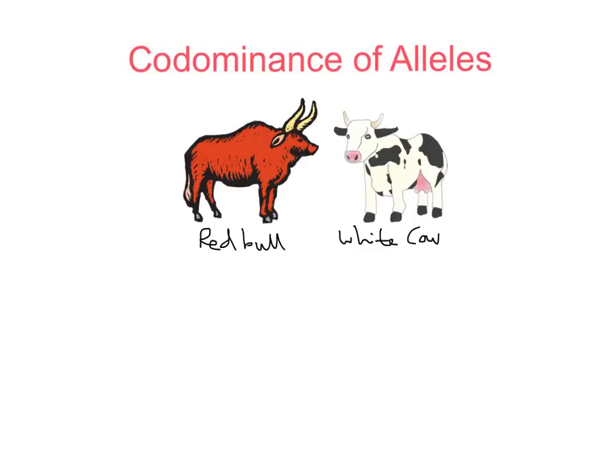This red coat colour in the bull is not completely dominant to white. When you look at coat colours in horses and cattle, animals that have both alleles have coats that are what we call roan-coloured — that's R-O-A-N — coats with a mix of red and white hairs. The red and white hairs are expressed equally and independently. So we've got this red bull and white cow, and what I've written there are the parental phenotypes.